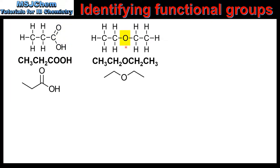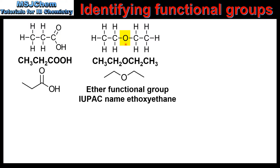In our next example we have an oxygen atom bonded to two alkyl groups, therefore this is an ether functional group. In the condensed structural formula an ether functional group is an oxygen bonded to two carbon atoms, each also bonded to two hydrogen atoms. In the skeletal formula the only atom shown is the oxygen atom.